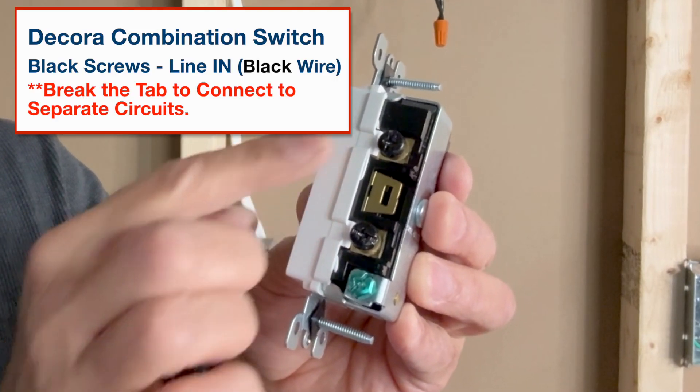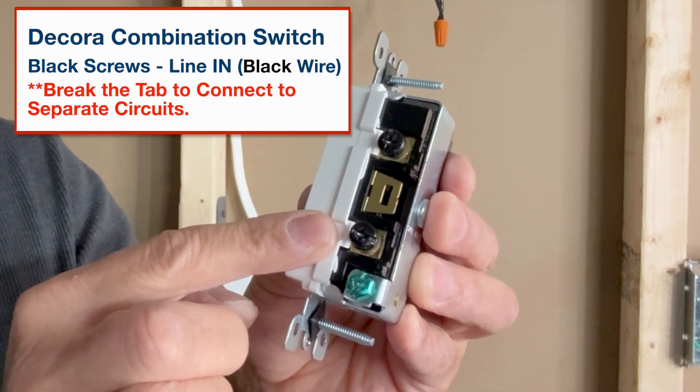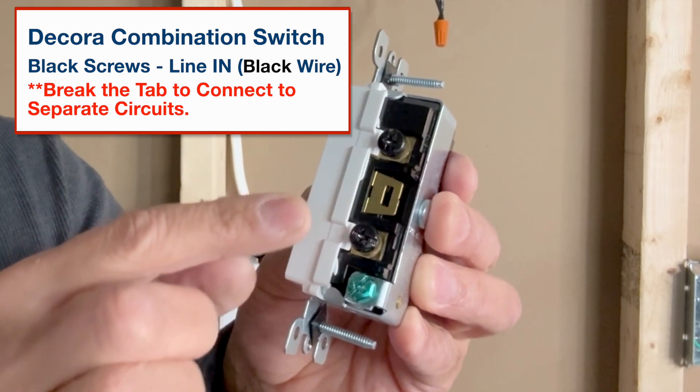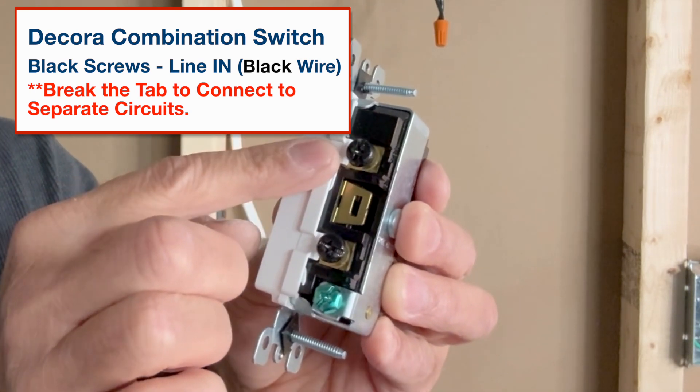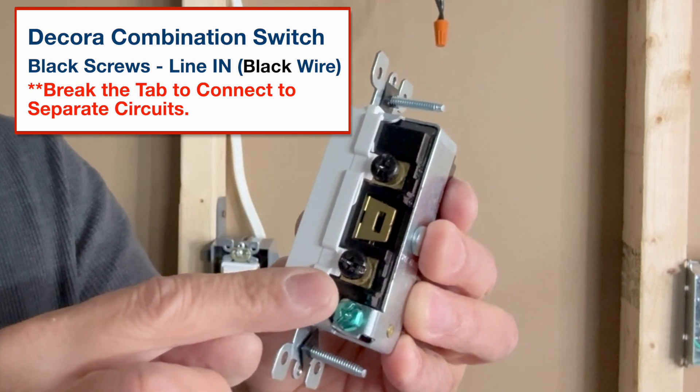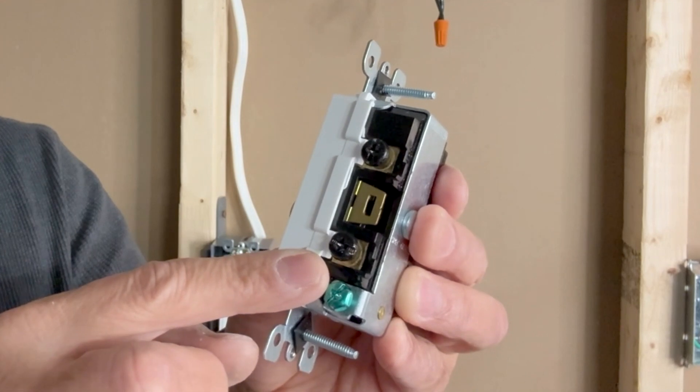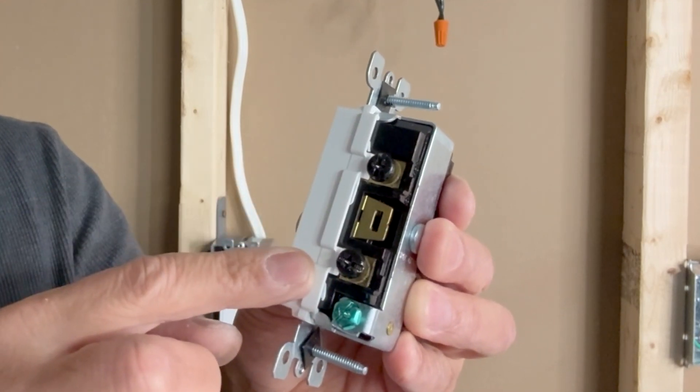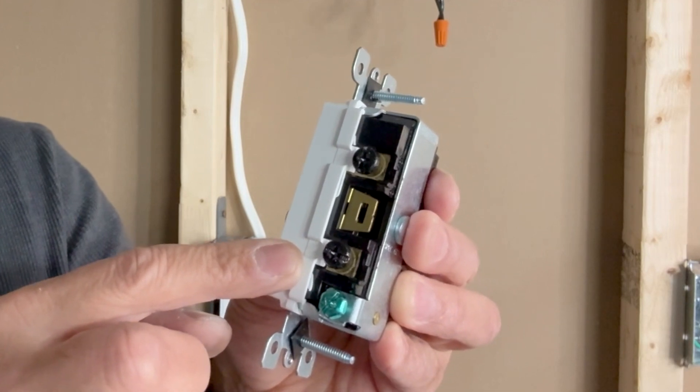On the right side we see two black screws. These two black screws or black terminals are connected using this brass strip. In case we want the outlet and the switch on different circuits we will have to break this strip. In that case the outlet will be connected to a different power line and the switch will be connected to a different power line. I am using only a single circuit so I don't have to break this.